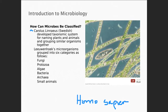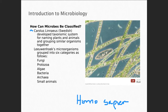Anton van Leeuwenhoek came after Linnaeus. He was a mathematician who was able to do all kinds of calculations, and he developed the first microscope. It was rudimentary, but he could see smaller things in a drop of water. He started to observe and categorize — fungi, protozoans, algae, bacteria, and the archaea.